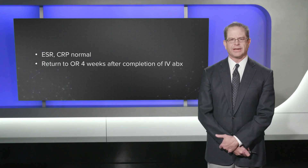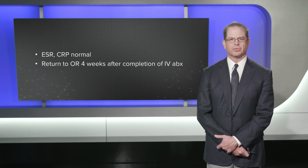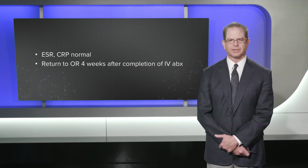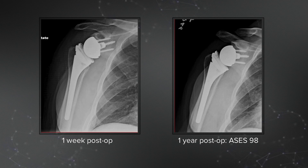Blood work was initially elevated after surgery but returned to normal. He was taken back to the operating room for stage two repair four weeks after completion of IV antibiotics. At the time of surgery we elected to perform a reverse total shoulder arthroplasty due to rotator cuff insufficiency.